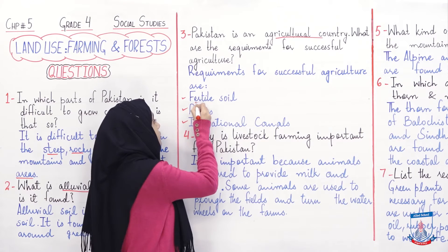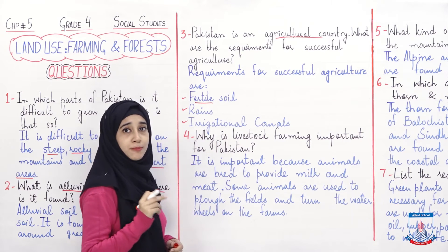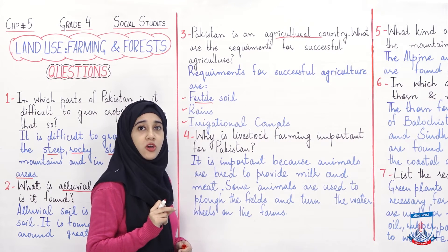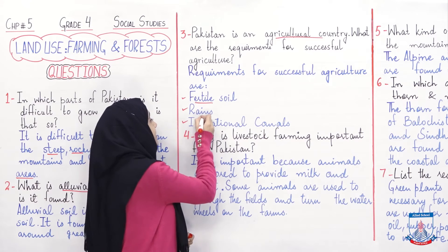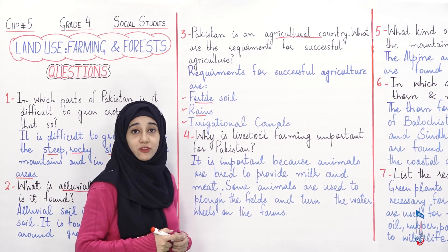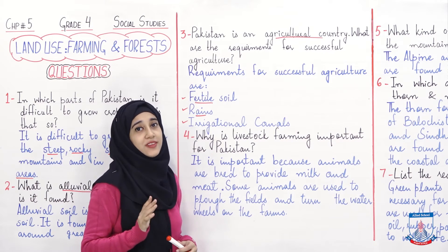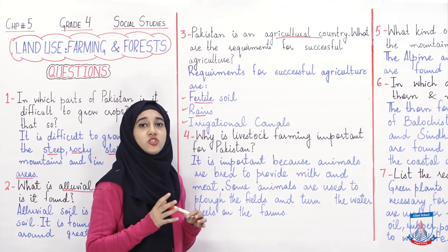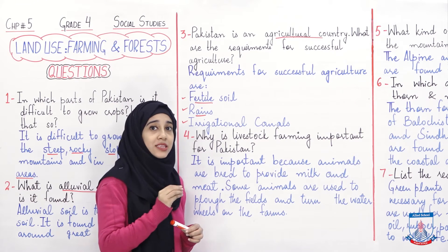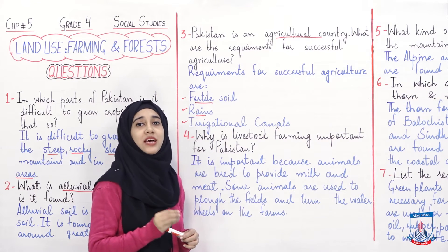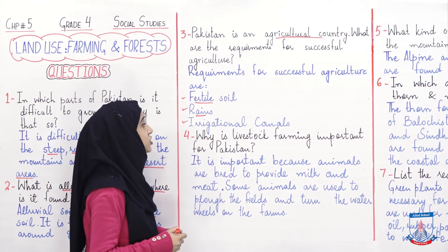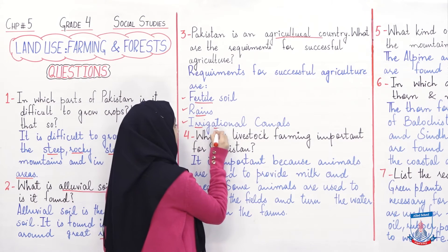So requirements for successful agriculture are: fertile soil — سب سے پہلی requirement کیا ہے — fertile soil یعنی کہ مٹی زرخیز ہونی چاہیے، اچھی ہونی چاہیے تاکہ آپ کی فصلیں اچھے سے ہوں۔ Then rains — obviously بارشیں بہت ضروری ہوتی ہیں فصلوں کے لیے۔ لیکن excess of everything is bad — بارشیں بھی ایک حد تک فصلوں کے لیے اچھی ہوتی ہیں، بہت زیادہ بارشیں فصلوں کے لیے نقصان دہ بھی ہو سکتی ہیں۔